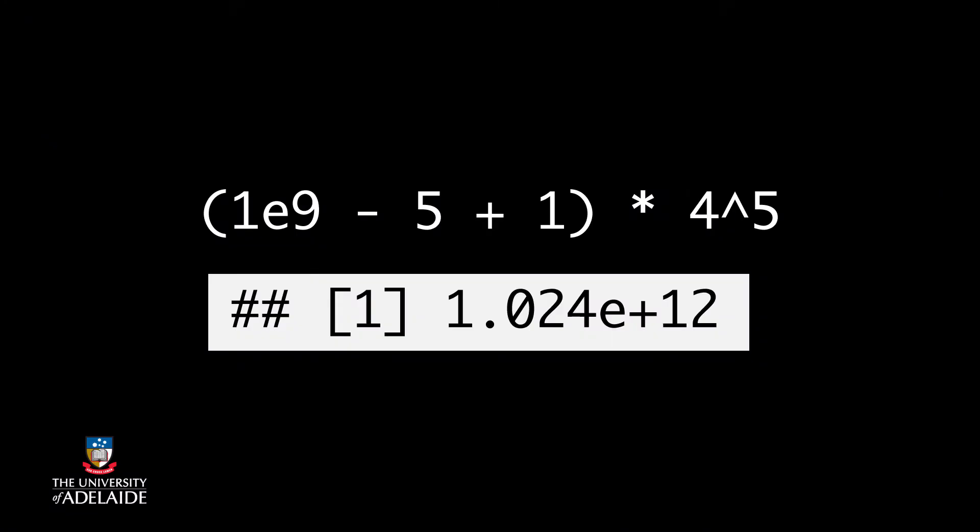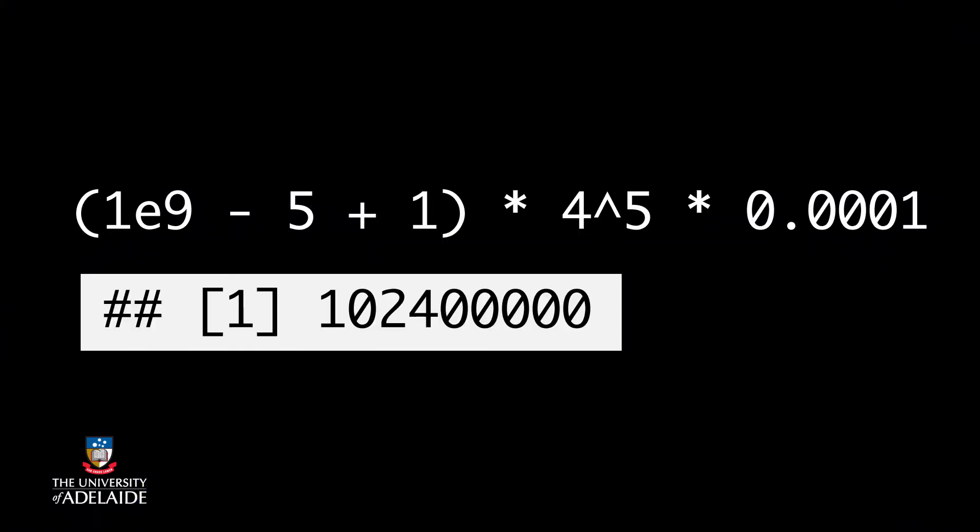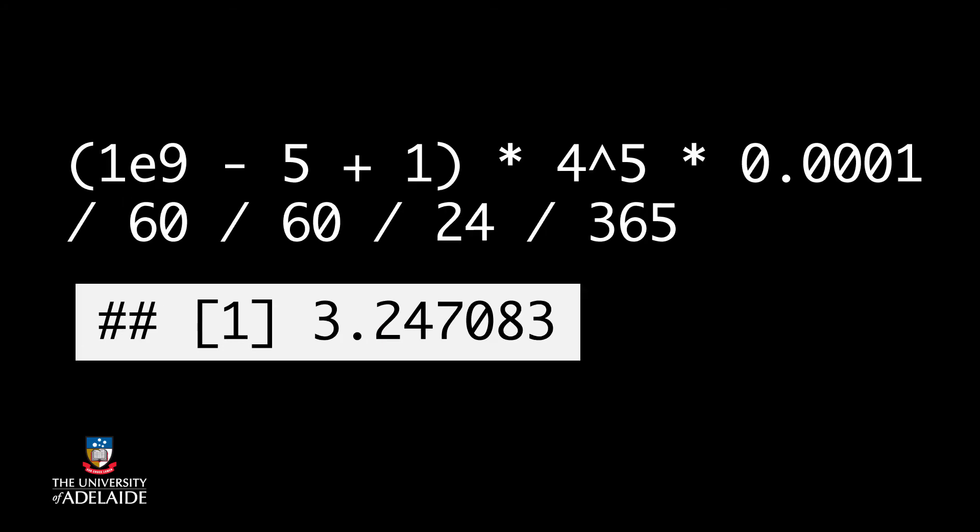To give you an idea how long this will take, the human genome is 3 billion base pairs. If you want to do 5-mers, then this looks like this. If each step takes 0.0001 of a second, then that can be worked out in seconds like this. That's 3.24 years.